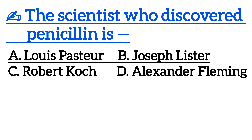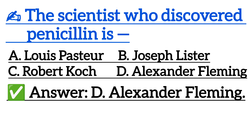Next one is: The scientist who discovered Penicillin is — Option A: Louis Pasteur, Option B: Joseph Lister, Option C: Robert Koch, Option D: Alexander Fleming. Correct answer is Option D: Alexander Fleming.